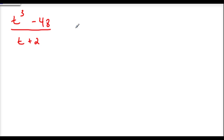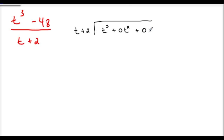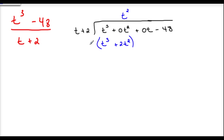Our next example: t plus 2 into t cubed minus 48. Let's make sure we have our fillers here. So we've got t cubed plus 0t squared plus 0t minus 48 — I have two fillers on this one. How many times does t go into t cubed? t squared times. So t times t squared is t cubed. And 2 times t squared is positive 2t squared. This is exactly why you need the filler — because now I created a 2t squared term and I want to put it under the 0t squared. Otherwise, if I didn't put the filler in, it would have came under the 48 and gotten messed up.